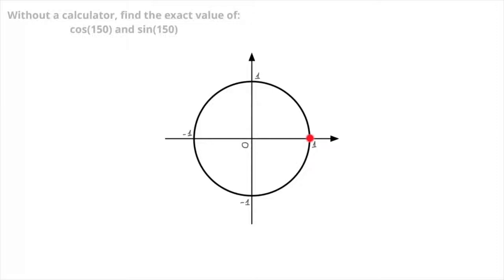starting from this point here with coordinates 1, 0, which is always our starting point, we move around the unit circle through an angle of 150 degrees, and that would approximately lead us to here on the unit circle. So let me just mark that point — that would be this point here, and I'll call that point P.